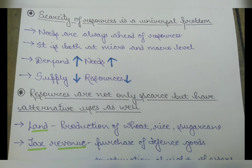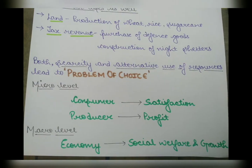For example, land can be used for wheat, rice, or sugarcane — that is a micro level example. At the macro level, take tax revenue: we do not use it for only one thing. We use it for defense, for production, and also for construction of night shelters. So resources are scarce and also have multiple uses.